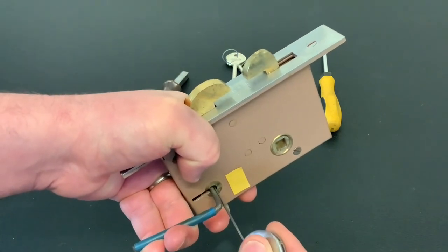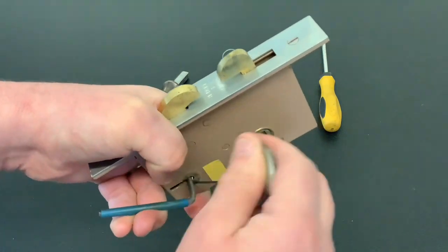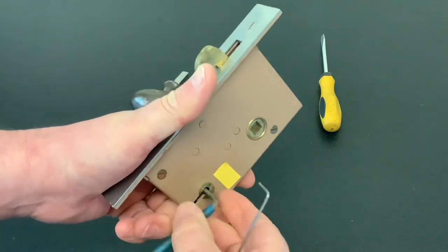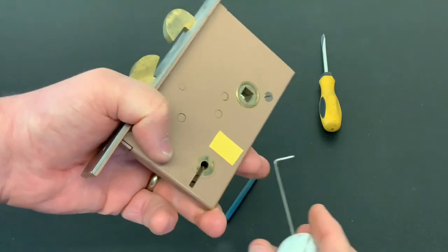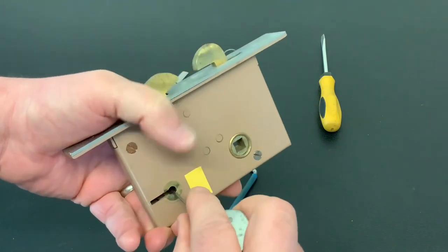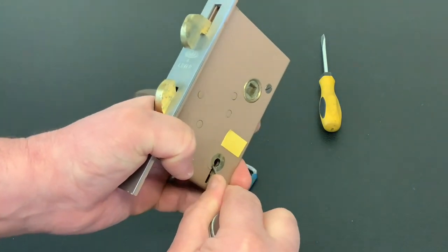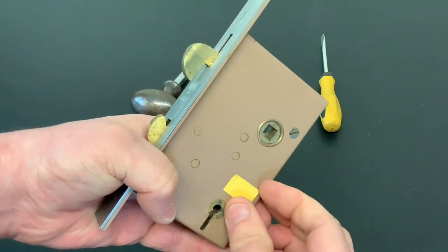We're almost there. There you go, we've got it! So obviously when you pick it, it doesn't throw the bolt fully. Just take your tool out and get your wire, put your wire up the top, and just throw it across.